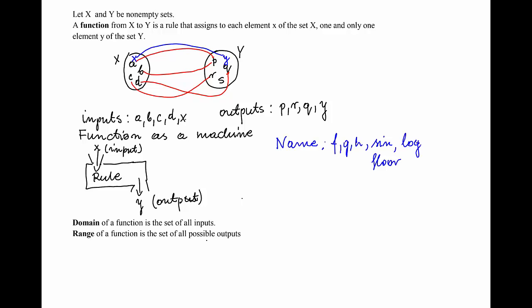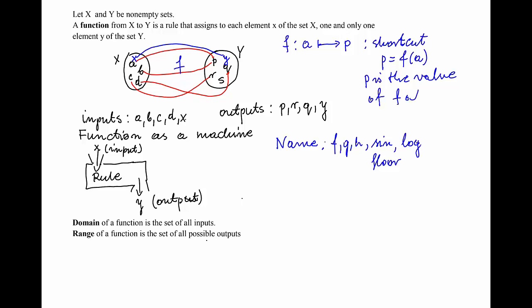So if I denote my function in the original example by f, then we can say that function f assigns to the element a the element p of the other set. This is a lot of writing to say that to a we assign p, so the shortcut is to write that p is f of a. That means p is the value of f at a. This is very useful notation because we can quickly identify inputs with outputs and via what function those inputs and outputs are connected.